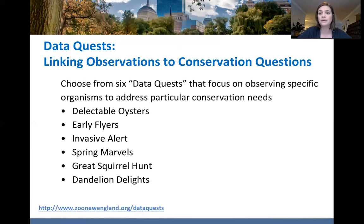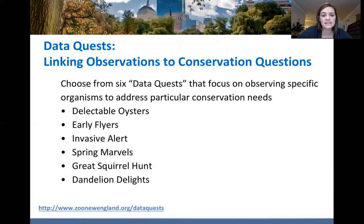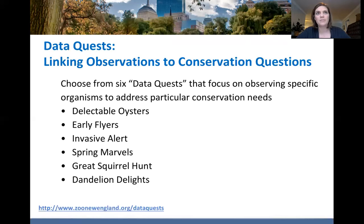The final tool is really great not just for educators and students, but for anyone interested in taking the CNC in a more focused direction. We've been developing what we call data quests — these link our observations to questions of local interest. There are six data quests that focus on observing specific organisms to address particular conservation needs. The options include: delectable oysters, early flyers (butterflies, moths, and other pollinators you might find in April), invasive plants, spring marvels (observing skunk cabbage), the great squirrel hunt, and dandelion delights.